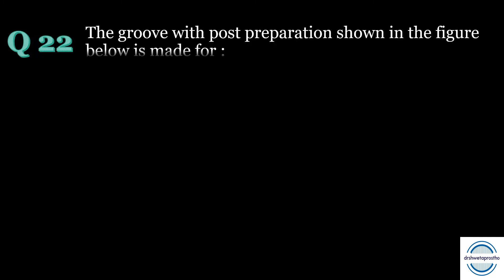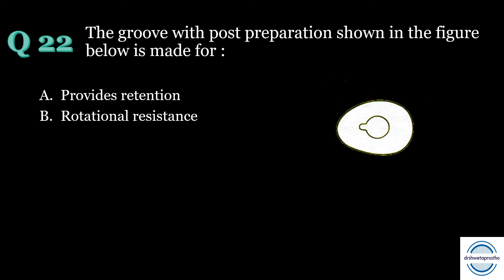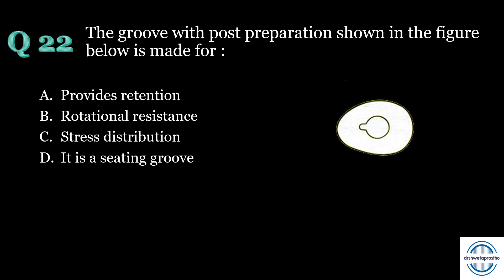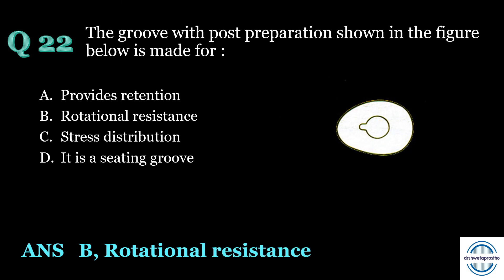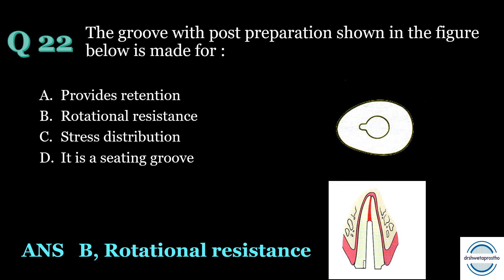Question number twenty-two: The groove with post preparation shown in the figure is made for — A) provides retention, B) rotational resistance, C) stress distribution, or D) it is a seating groove? The answer is B — rotational resistance. It provides resistance to rotational forces, especially in circular canals, and is mainly given on the thickest walls.